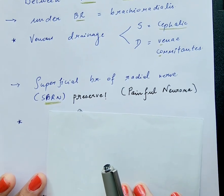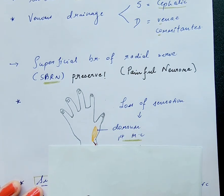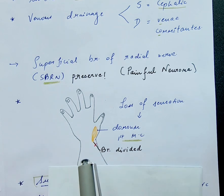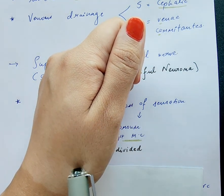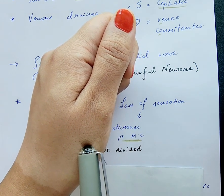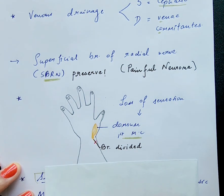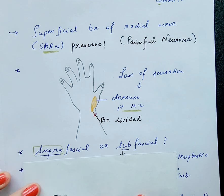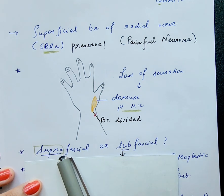Most of the branches as well as the major part of the nerve are preserved. However, sometimes a single branch or small branches that supply sensation to the dorsal part of the first metacarpal are usually lost, so sensation in this region will be affected. This will not lead to a painful neuroma and can also recover in the long run.